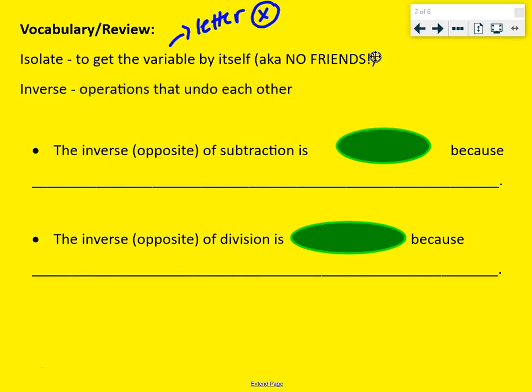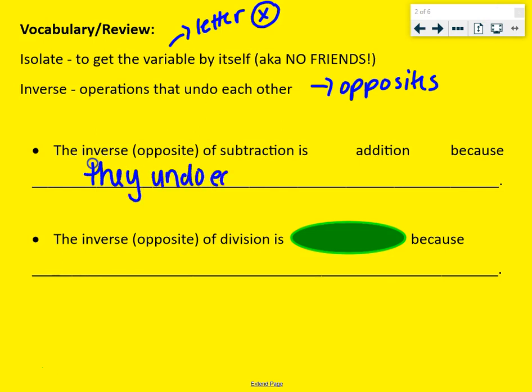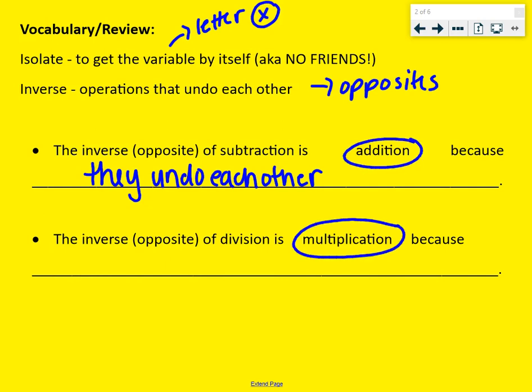Inverse is operations that undo each other. We also call these opposites. The inverse or opposite of subtraction is addition because they undo each other. And the inverse or opposite of division is multiplication. Circle that, star that. And it's because they undo each other.